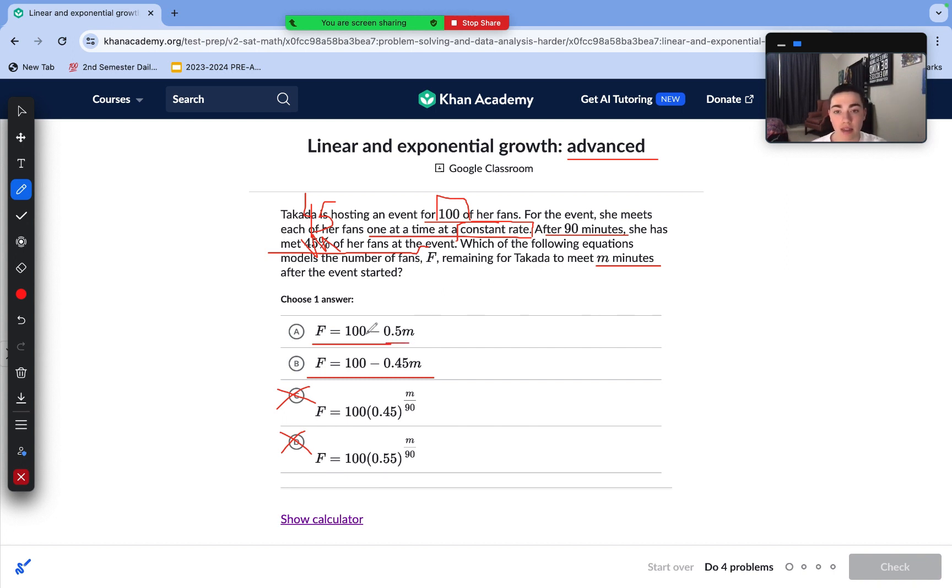19 times negative 0.5 is negative 9.5. 100 minus 9.5 is equal to 90.5. And then if, after 19 minutes, she's met 45 of her fans, that does remain true, that there will be 55 remaining. If she's met 45 fans and there's 100 total, there's going to be 55 remaining after that 19 minutes. That means that this ordered pair actually does match up into answer choice A, and that means that it is the correct answer.